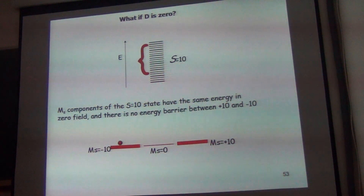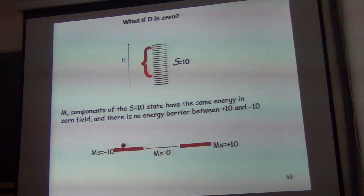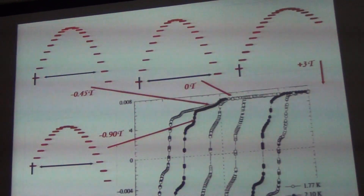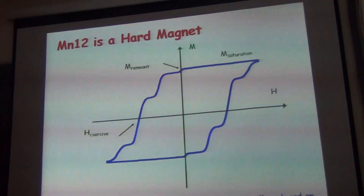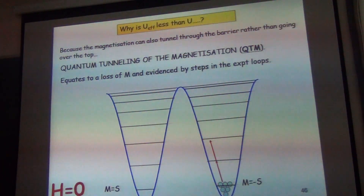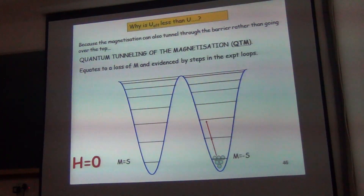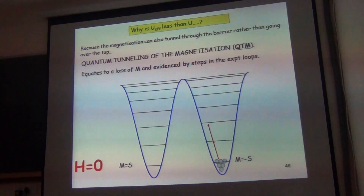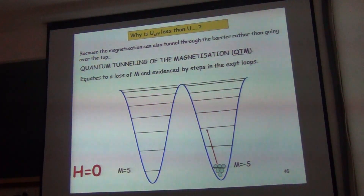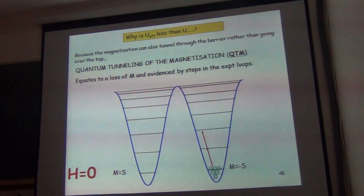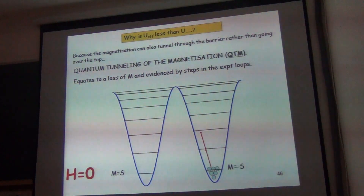So what if D is zero? We are talking about all these zero-field splitting. Why is this important? I actually have to go backwards to where these two MS levels are. So here, what I have is minus 10, and MS equals zero above. If you remember that with zero-field splitting, if D is negative, you have the largest MS level lower in energy. That is what happened here — in magnitude, zero-field splitting is negative.